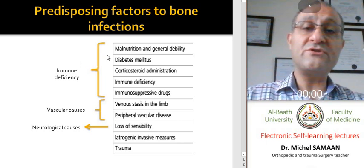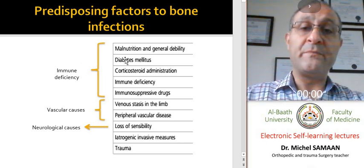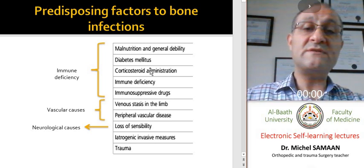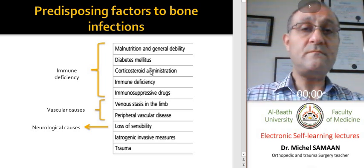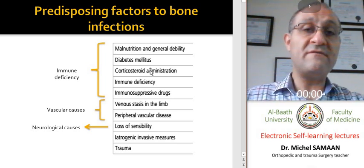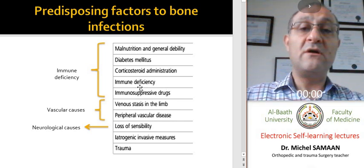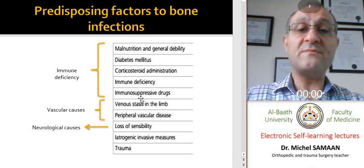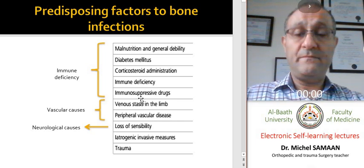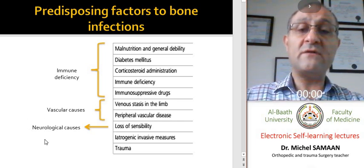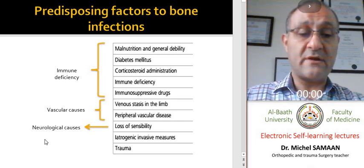Anything that can depress the immunity of the patient or the person may predispose to a bone infection, and vascular problems or neurological problems. For example, malnutrition, diabetes mellitus, corticosteroid administration, immunodeficiency as in HIV, or the use of immunosuppressive drugs. As well, vascular problems — venous or arterial — and neurological problems.